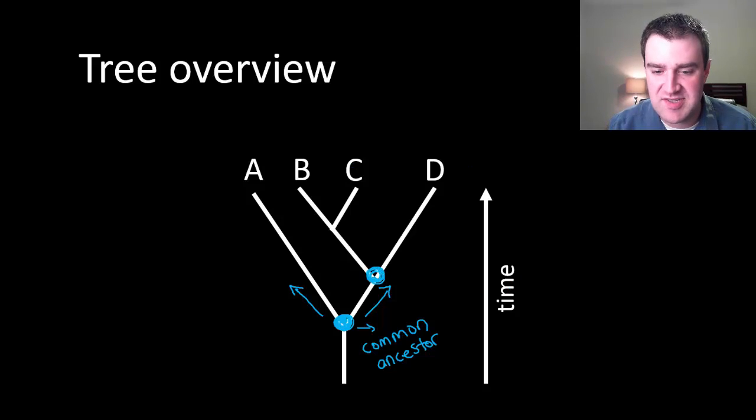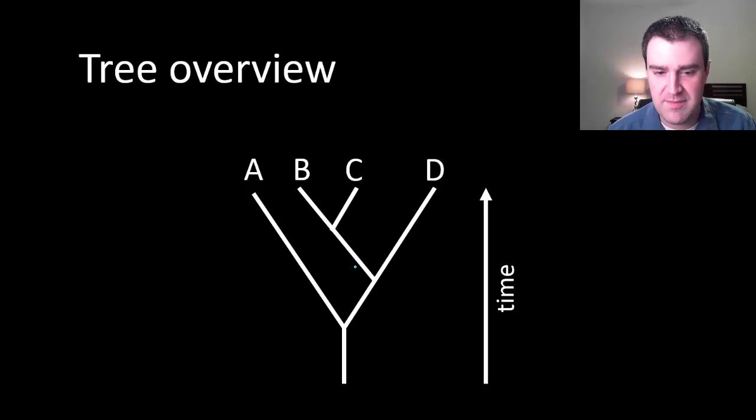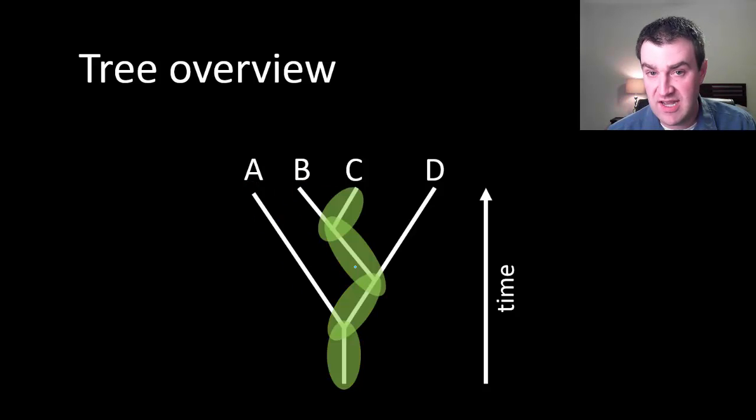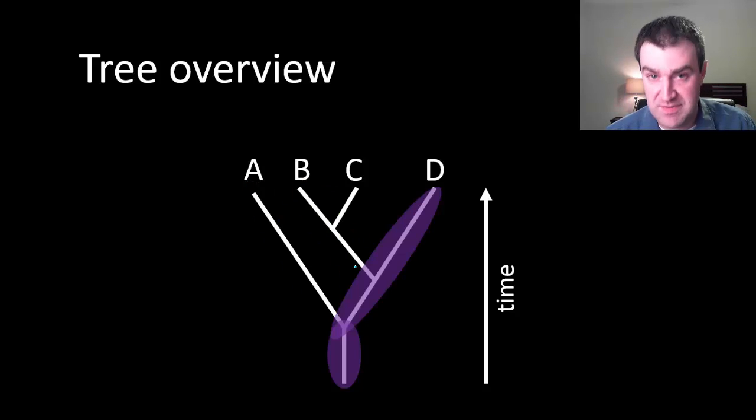Then there was another common ancestor to B, C, and D and they went their two separate ways. What we're trying to show in a phylogenetic tree is that everybody started at the bottom and then different paths, different evolutionary events led to each of the species A, B, C, and D. So A went down this path, B went down this path, C went down this path, and D went down this path.